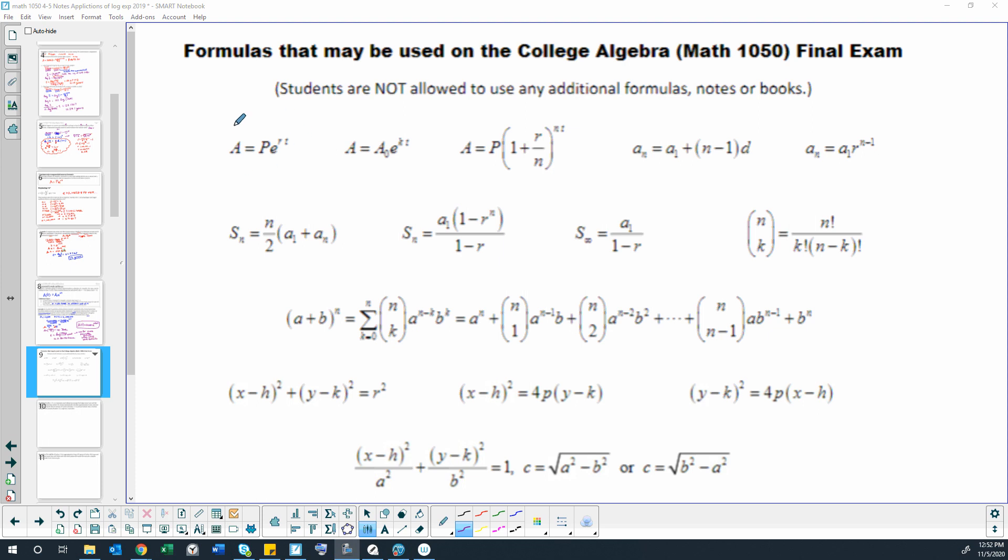You should know that this is our compounded continuously interest formula, this is our growth and decay formula which looks a lot like our compounded continuously interest formula, and this is our regular compounded interest formula. Of course it doesn't tell you what the variables mean so you would need to know that. This formula sheet is simply to verify that you've got those formulas right, but you still need to know a lot about them that's memorized in addition to having this sheet to refer to.